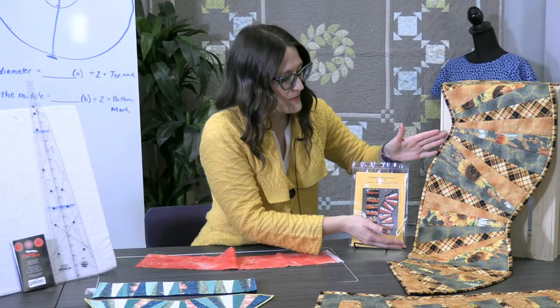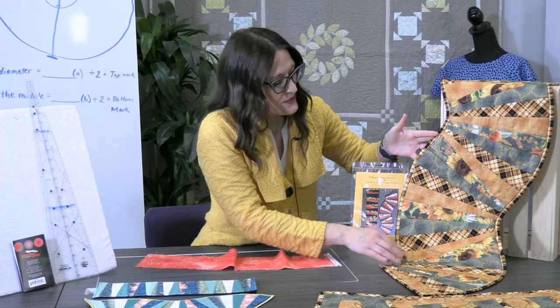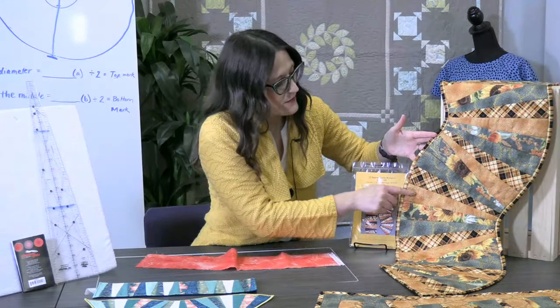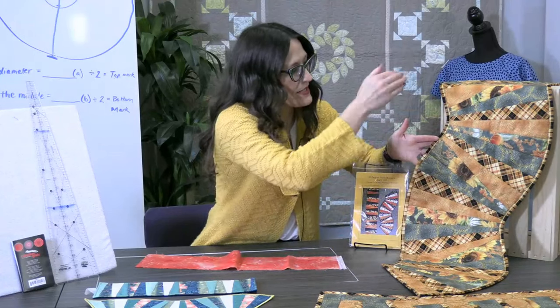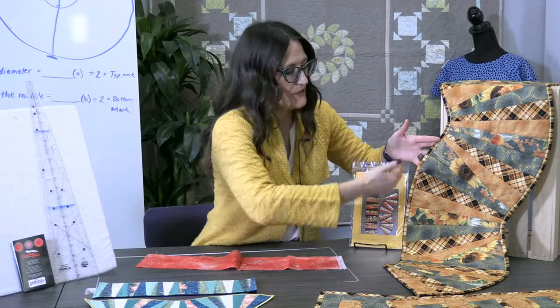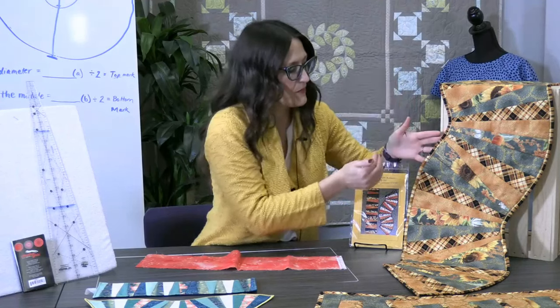This was Ann Allman's from up north in Bellevue. She did one, two, three, four, five, six, seven, eight wedges in a row and she just flipped them every other one and sewed them together and did this fun curvy table runner.